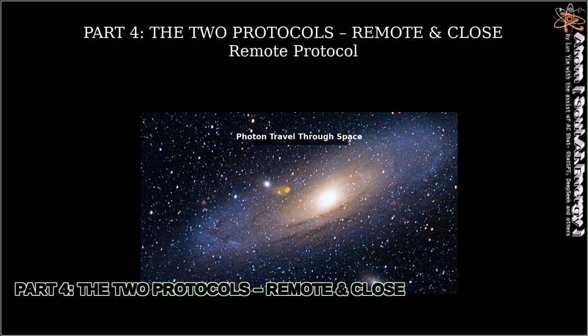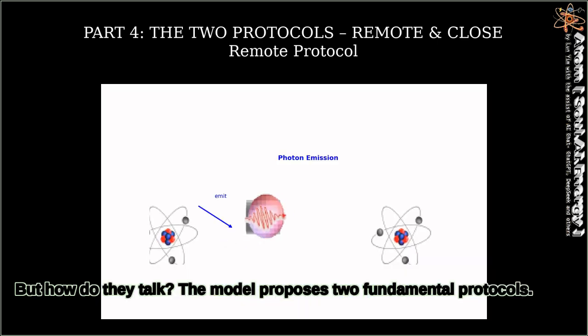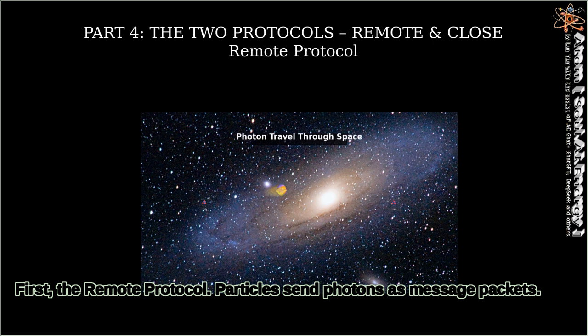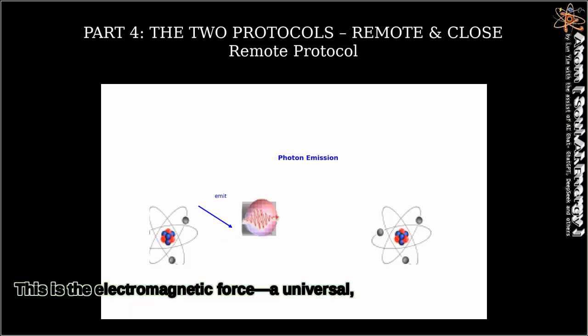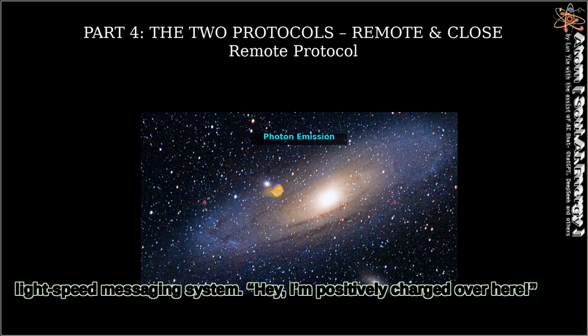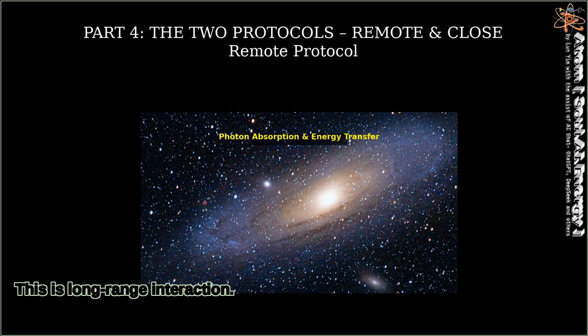Part 4: The Two Protocols—Remote and Close. But how do they talk? The model proposes two fundamental protocols. First, the remote protocol. Particles send photons as message packets. This is the electromagnetic force—a universal, light-speed messaging system. Hey, I'm positively charged over here. This is long-range interaction.